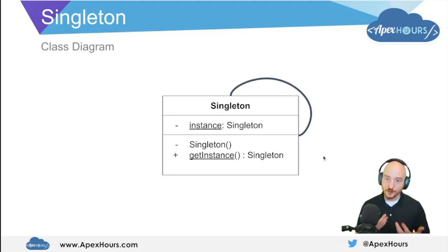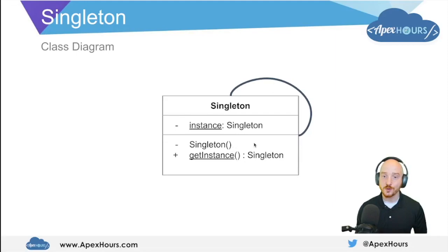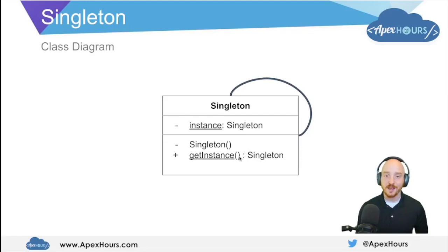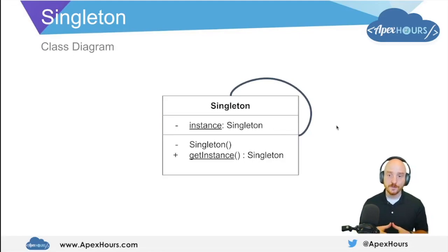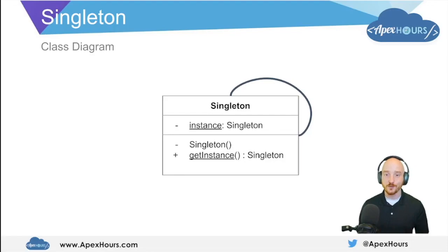By using the singleton pattern we can guarantee programmatically that nobody can create a new instance of Singleton. The only way to get an instance of Singleton is to use the 'getInstance' method. This 'getInstance' method will check to determine if this instance is null — if it is, it'll create it; otherwise it will return the existing one. So this is a creational pattern that programmatically enforces that there can only ever be one instance of the Singleton class at runtime.